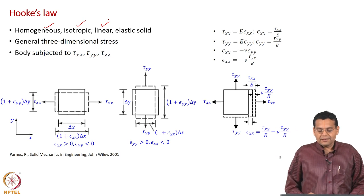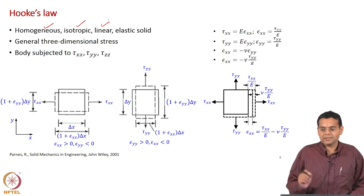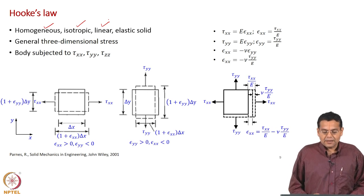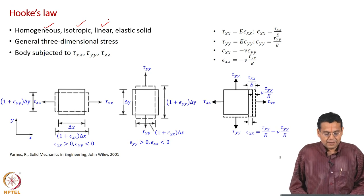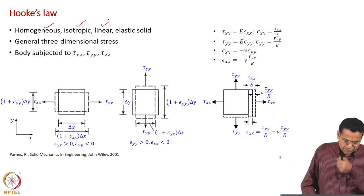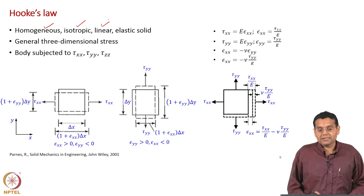Elastic means there is a definite relationship between stress and strain — this applies both for normal stress and shear stress, and for normal strain and shear strain. Linear tells you the relationship between stress and strain is linear. We consider a body subjected to a general three-dimensional stress.